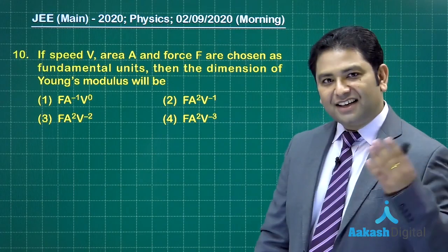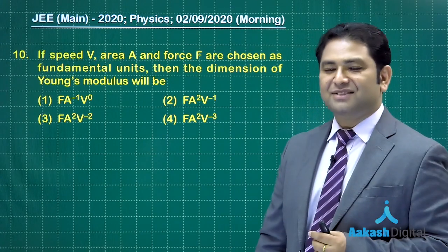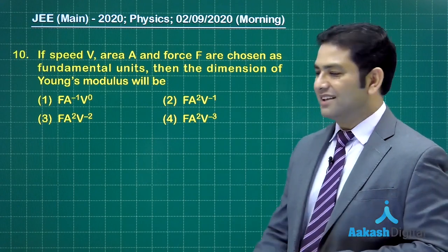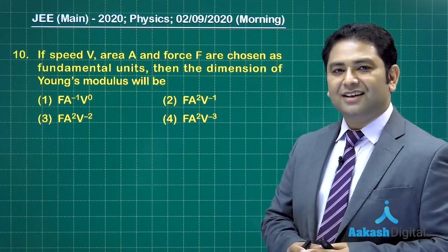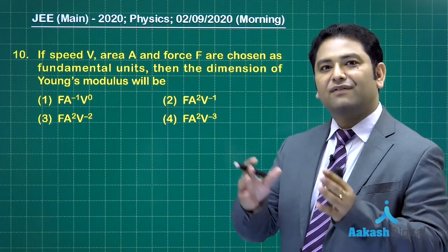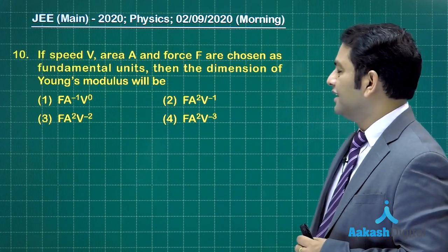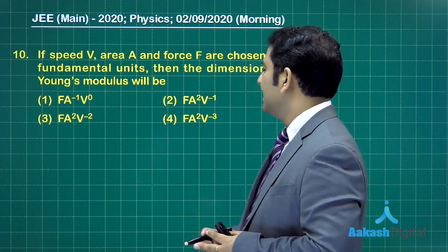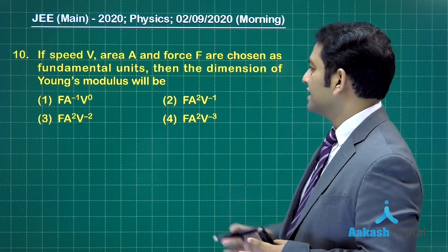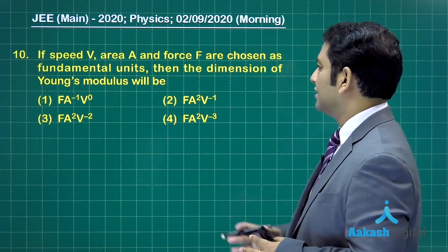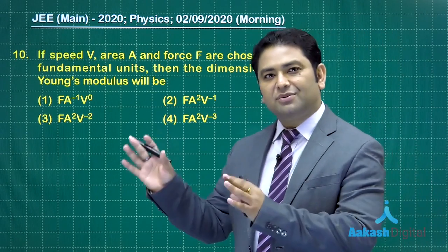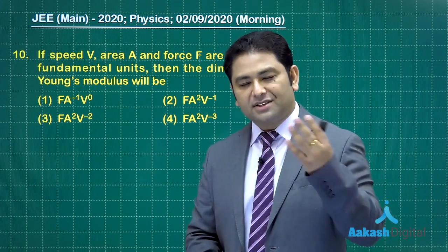So it's back-to-back from units and measurement, the dimension part. The question is about when the fundamental quantities are changed from the regular one. Here the speed V, area, and force are chosen as fundamental units, and we need to find the dimension of Young's modulus.